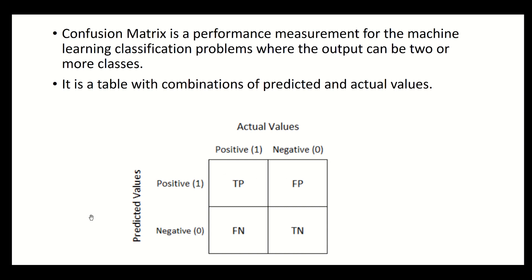In the confusion matrix diagram, you will see the actual values and the predicted values. This gives you: true positives, false positives, false negatives, and true negatives.